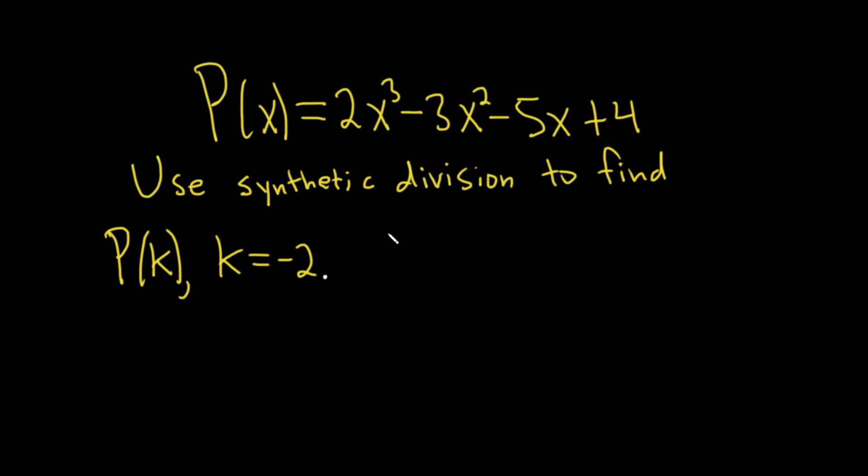I'm just going to put this over here on the side. If you divide a polynomial by x minus k, and if the remainder is 0, that means x minus k is a factor.